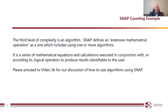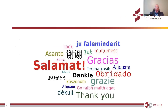The third level of complexity is an algorithm. SNAP defines an algorithm as an extensive mathematical operation which uses one or more algorithms. It is a set of mathematical equations and calculations used in conjunction with, or according to, logical operators to produce results identifiable to the user — in other words, a set of mathematical calculations that you must execute in a certain logical order. That will be the end of video 3A. Please proceed to video 3B to discuss how to size an algorithm using SNAP.